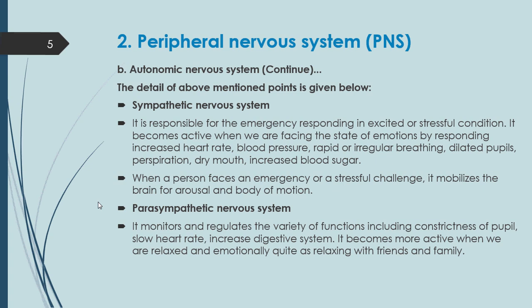The Parasympathetic Nervous System monitors and regulates a variety of bodily functions, including constriction of the pupil, slow heart rate, and increased digestive activity. These are all involuntary functions over which the individual has no conscious control — they happen naturally.